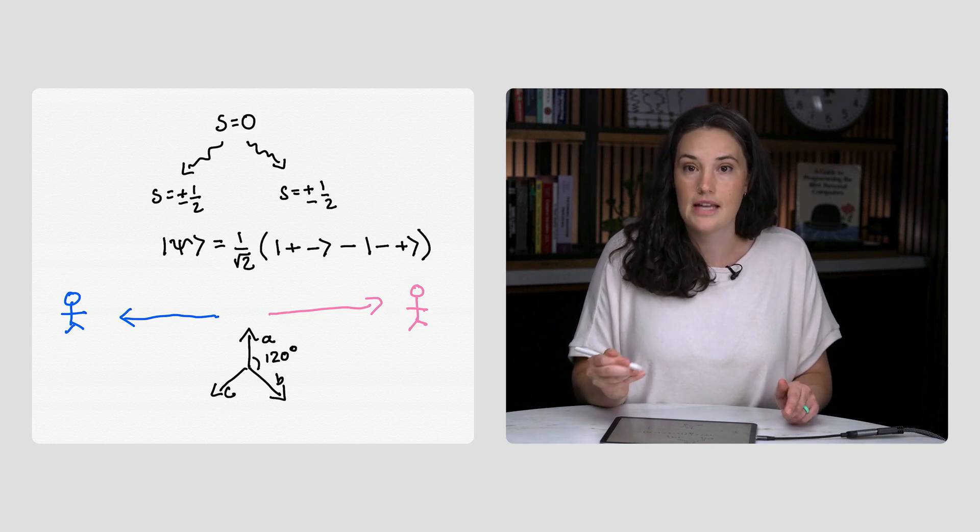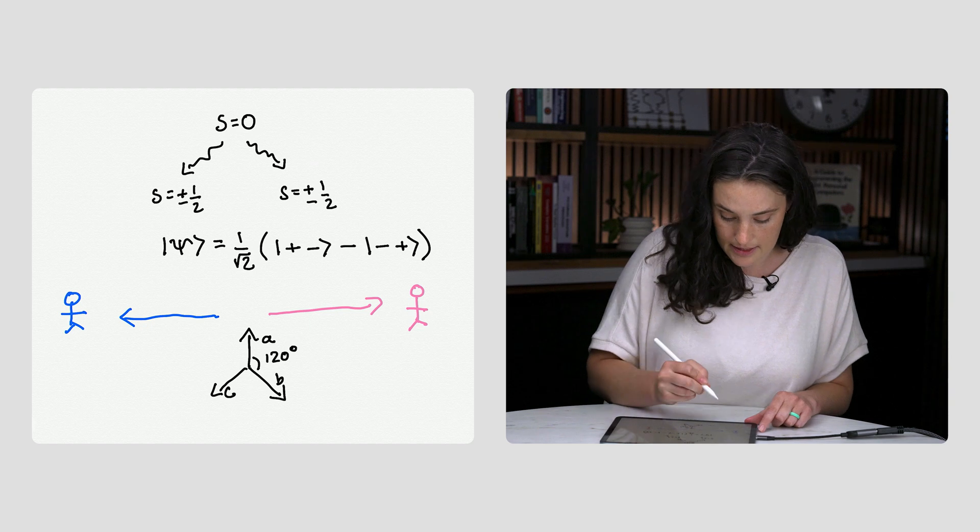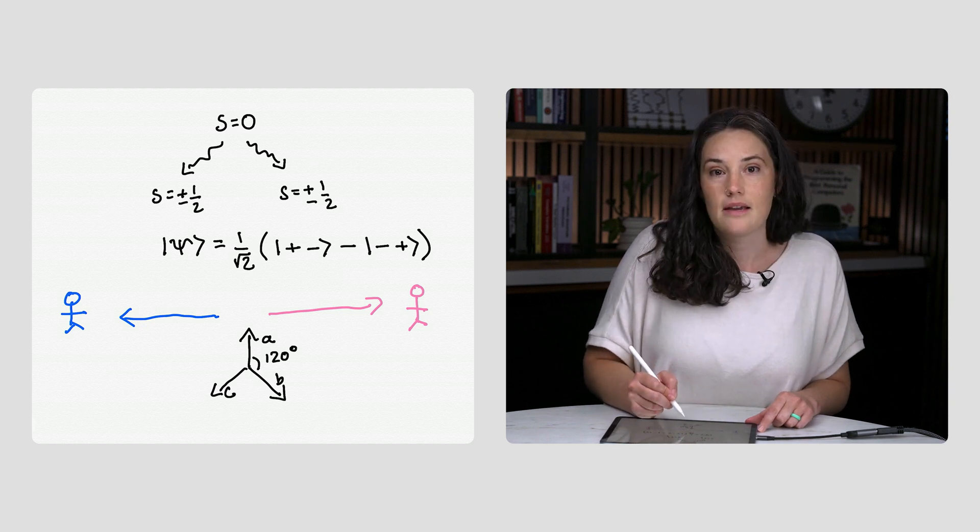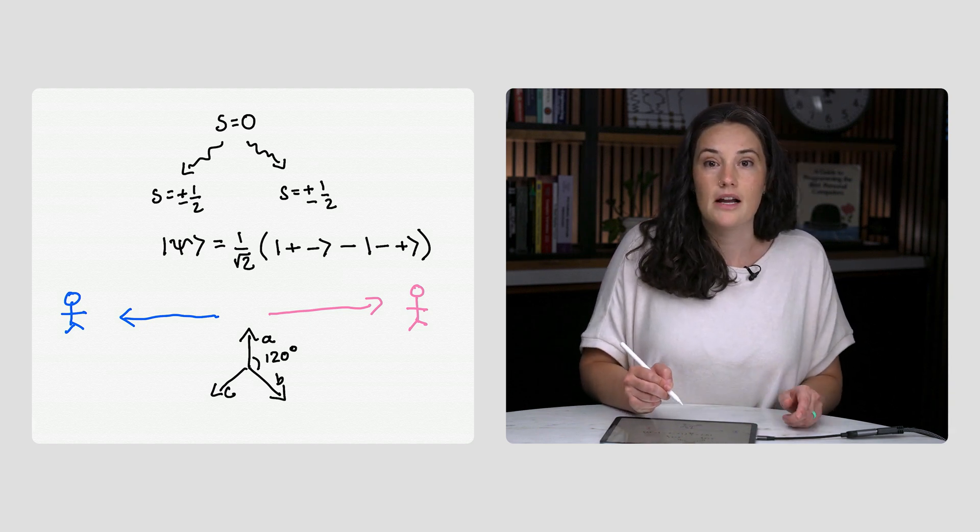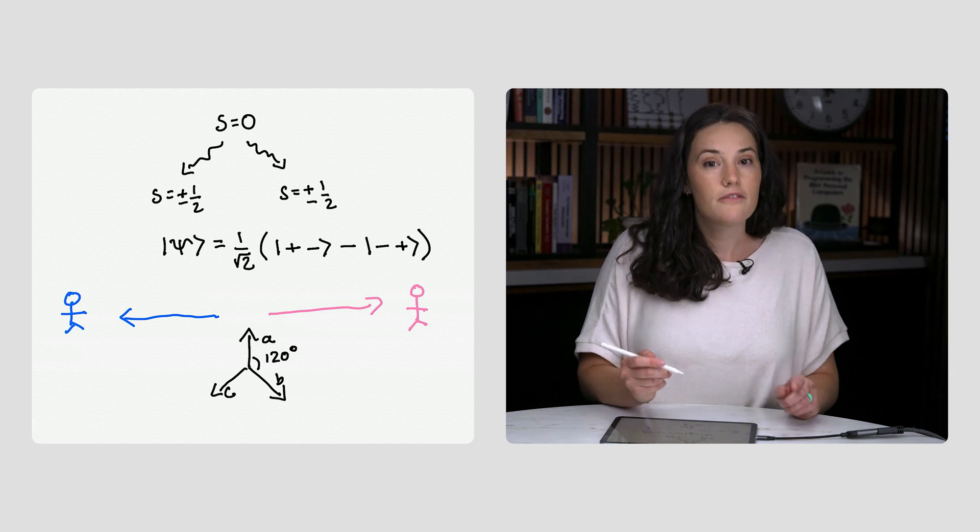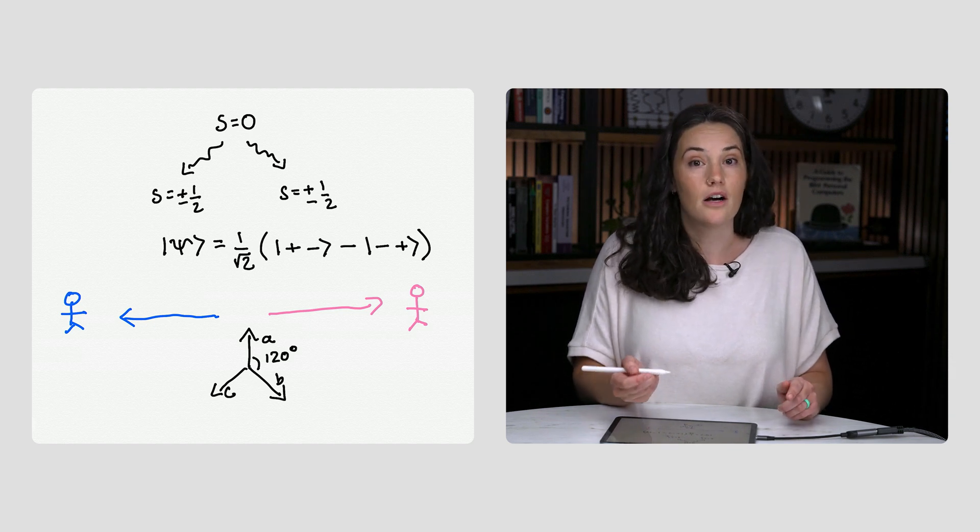if Lucas and Rihanna happen to measure along the same axis, say axis A, they can never get the same sign since the particles must combine to have spin zero. But when they pick different axes, how will their measurements be correlated, if at all?